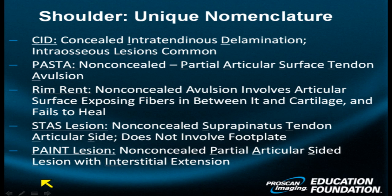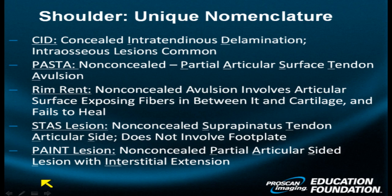The rim rent. This is a non-concealed avulsion involving the articular cartilage surface that exposes fibers in between it and the cartilage, and may not heal. So it's an important one to recognize.